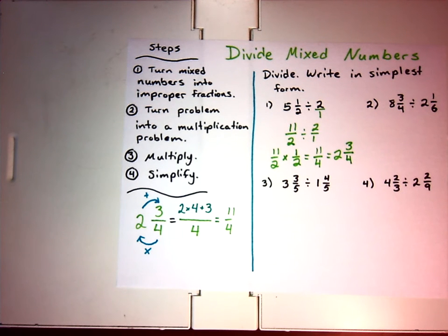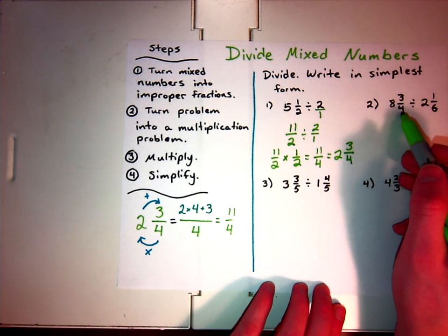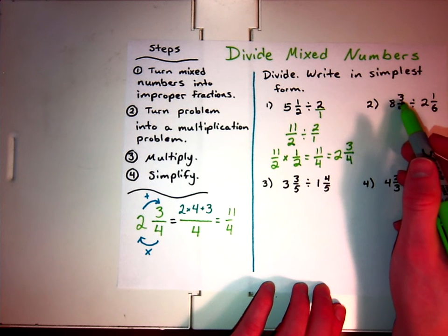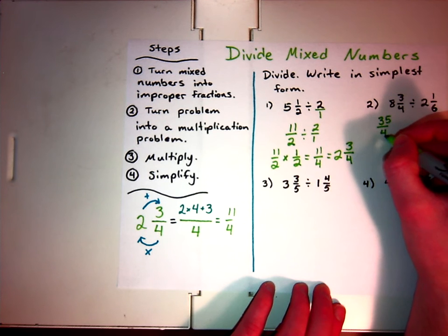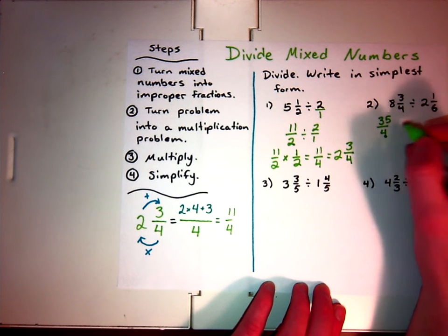For number 2, these are both mixed numbers, so I need to turn them both into improper fractions. So, 8 times 4, that one is 32. 32 plus 3 is 35. So, I get 35 over 4. Okay, and remember, I know I'm going to turn this into a multiplication problem. So, I'm going to do that right now.